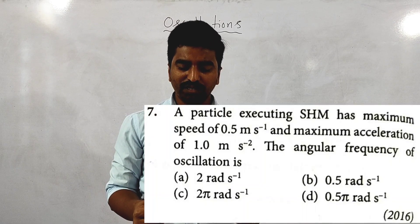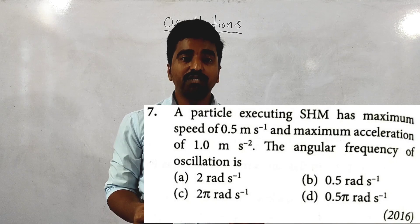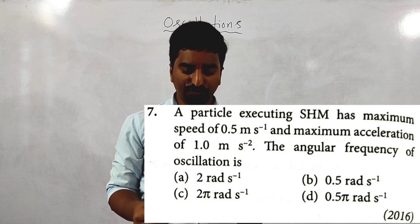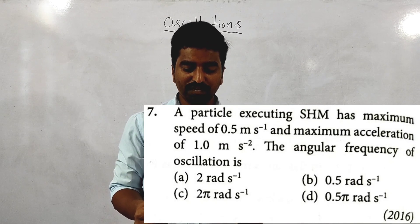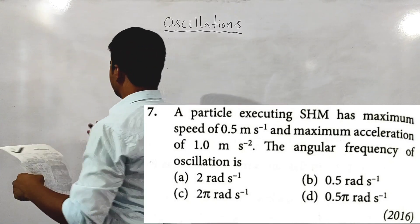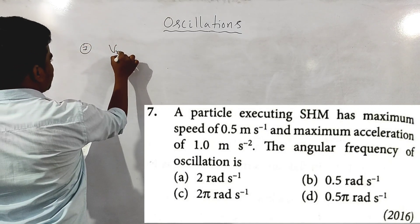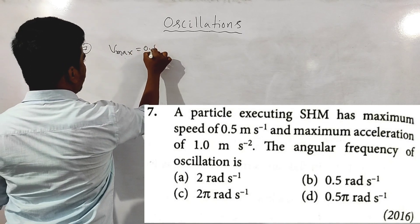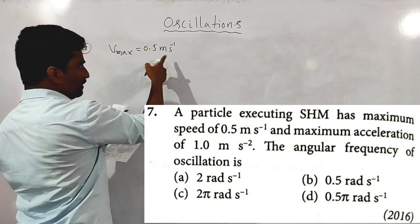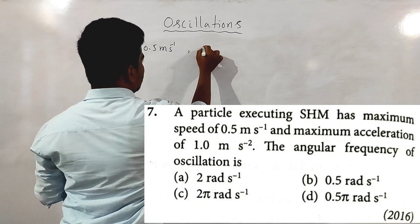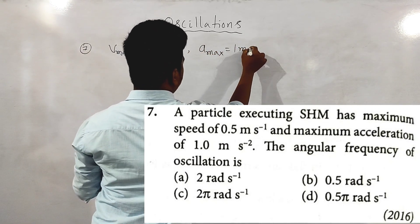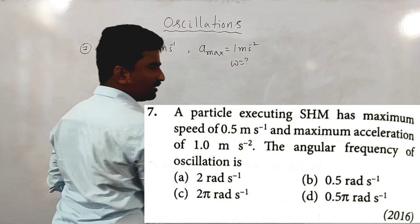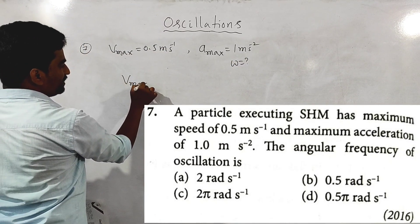Next question: a particle executing SHM has a maximum speed of 0.5 meters per second and maximum acceleration of 1 meter per second squared. The angular frequency of the oscillation is — this is a simple question. v maximum is given as 0.5 meters per second and a maximum is 1 meter per second squared.